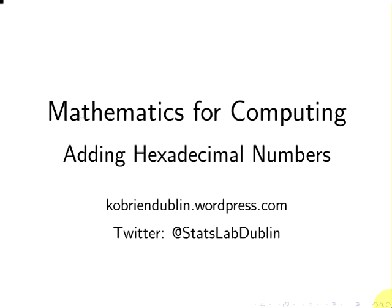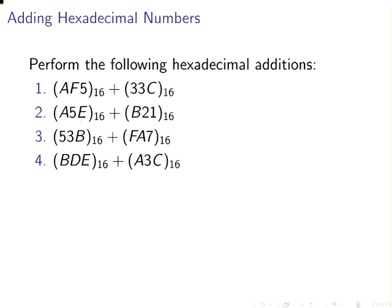In this presentation, we're going to look at adding hexadecimal numbers. So let's have a look at this. Perform the following hexadecimal additions: AF5 plus 33C, A5E plus B21, 53B plus FA7, BDE plus A3C.